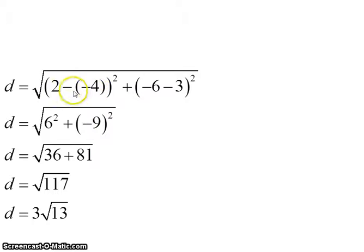So here we've got 2 minus negative 4, which is 6. Negative 6 minus 3 is negative 9. We square them. We get 36 plus 81, which is 117. Inside of our square root, we would simplify that number to 3√13.